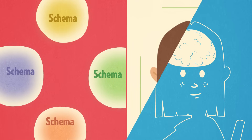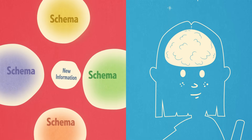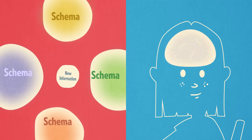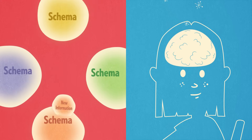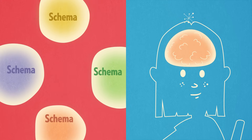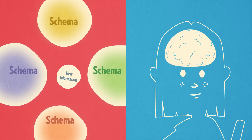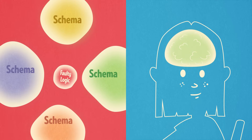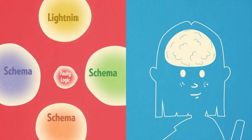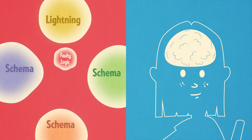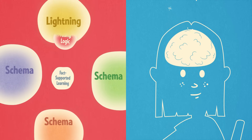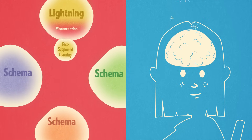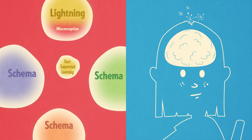Broad, conceptual understandings are a fundamental way that we identify patterns and absorb information. They are like a kind of biological shorthand for how we make sense of the world. But when a construct is based on faulty logic or missing data, the resulting misconception can become a barrier to fact-supported learning.